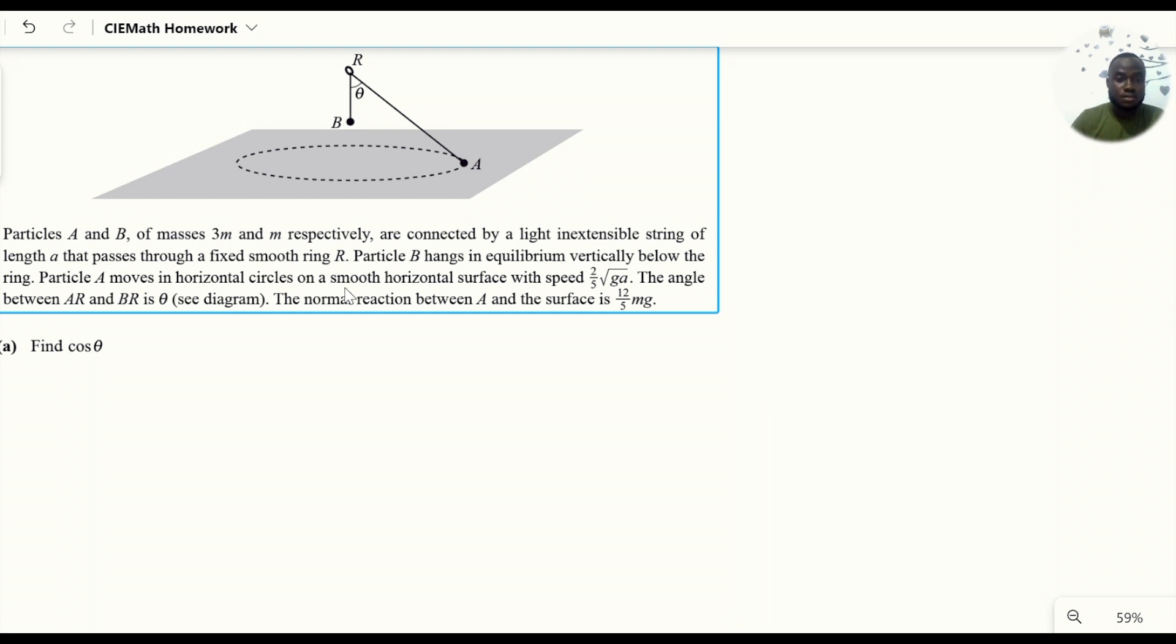Particle A moves in a horizontal circle on a smooth horizontal surface with speed 2.5√(gℓ). The angle between AR and BR is θ as shown. The normal reaction between A and the surface is (12/5)mg. We're going to find the value of cos θ.